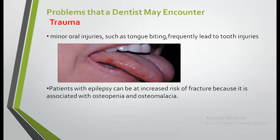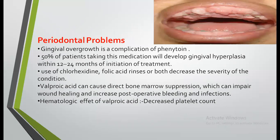Problems a dentist may encounter include trauma — minor oral injuries such as tongue biting frequently lead to tooth injuries. Patients with epilepsy can be at risk of fracture because it is associated with osteopenia and osteomalacia. Gingival overgrowth is a complication of phenytoin. 50% of patients taking this medication will develop gingival hyperplasia within 12 to 14 months of initiation of treatment. Use of chlorhexidine, folic acid rinses, or both, can decrease the severity of this condition.